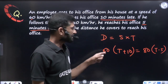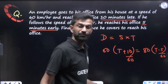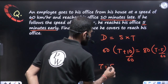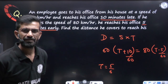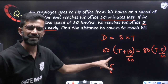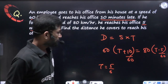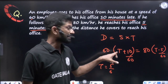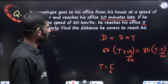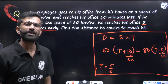Substituting back: distance = 60 × (5/6 + 1/6) = 60 × 1 = 60 km. A more direct approach: the gap in arrival times is 10 + 5 = 15 minutes = 1/4 hour. So: X/60 − X/80 = 1/4. LCM of 60 and 80 is 240: 4X/240 − 3X/240 = 1/4, giving X/240 = 1/4, so X = 60 km. Direct method gives the distance in one step.